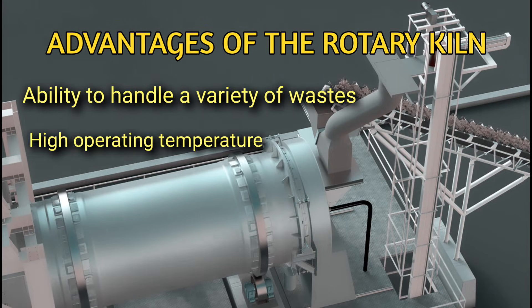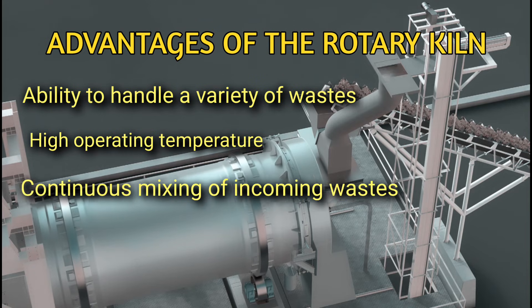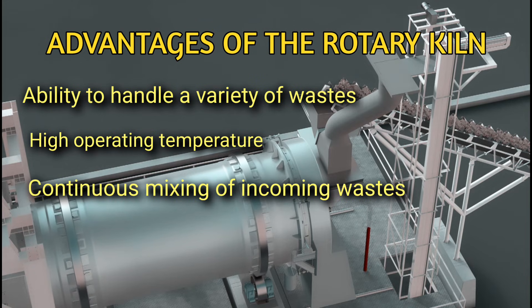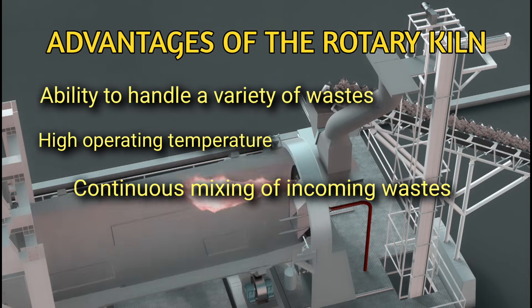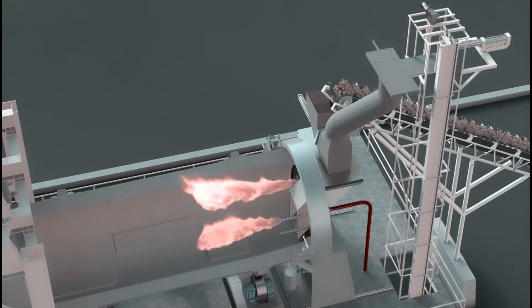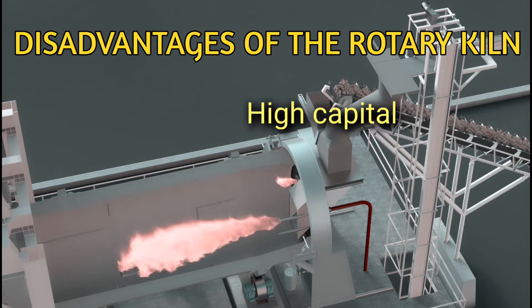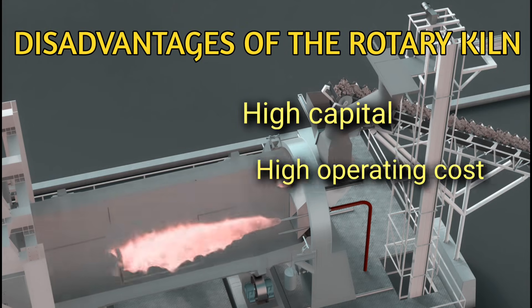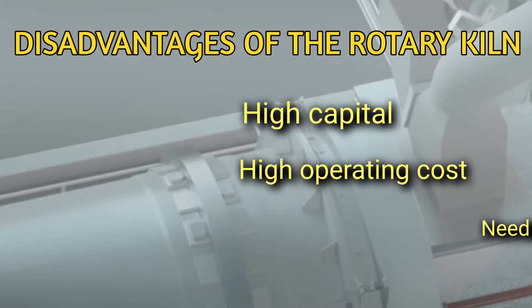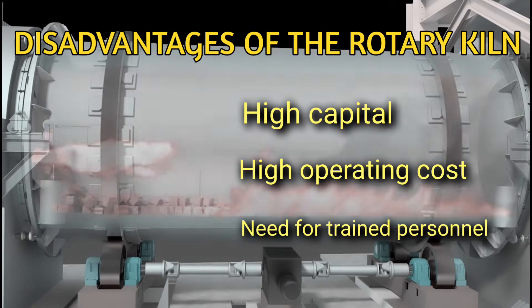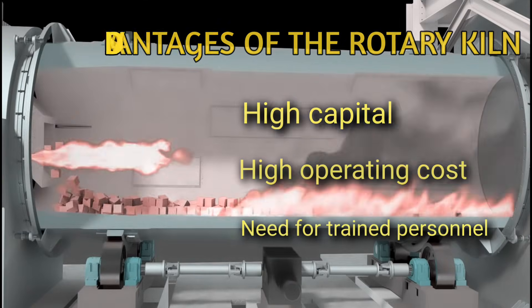Advantages of rotary kilns: ability to handle a variety of waste, high operating temperature, and continuous mixing of incoming waste. Disadvantages of rotary kilns: high capital and operating costs, and need for trained personnel.